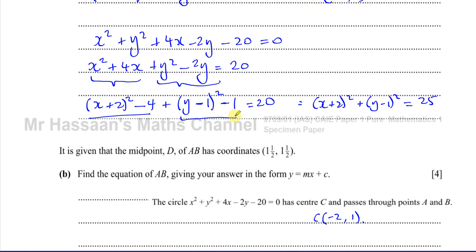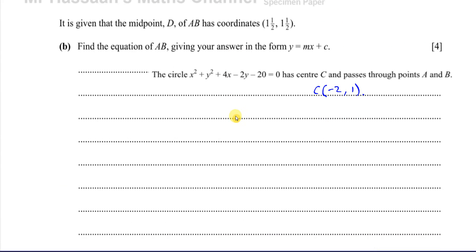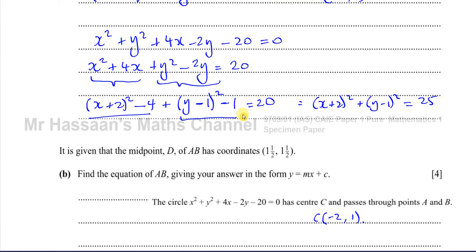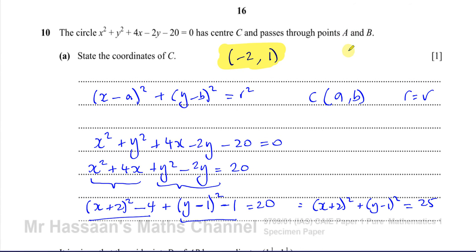That's part A done. For part B: it's given that the midpoint D of AB has coordinates 1½, 1½. AB is a chord of the circle — it just passes through points A and B, it's not stated to be a diameter. Find the equation of AB, giving the answer in the form y = mx + c.